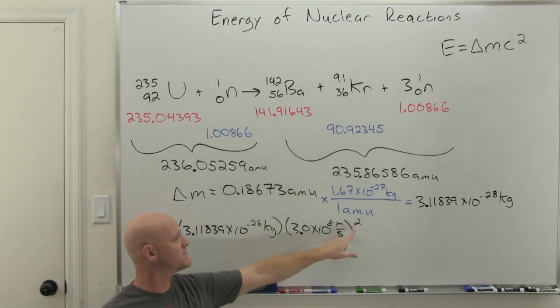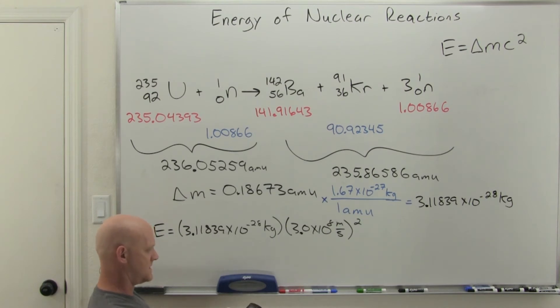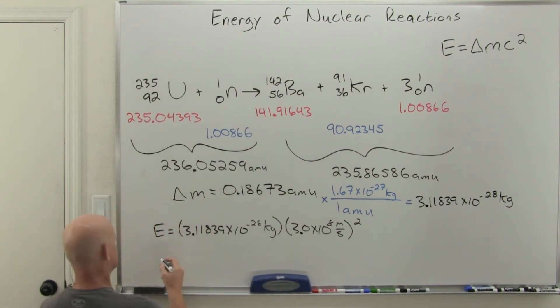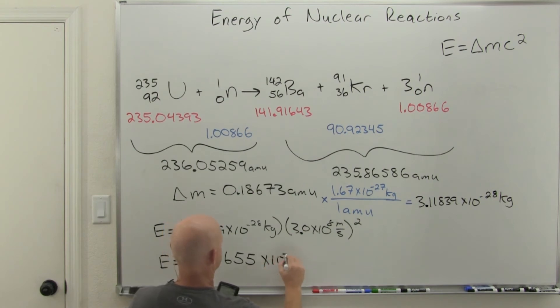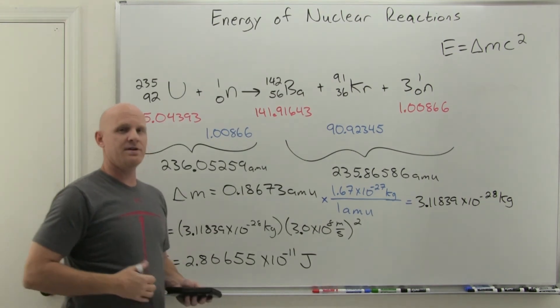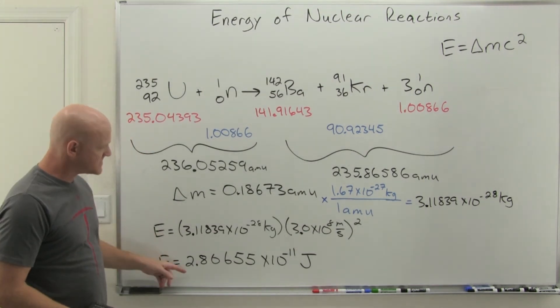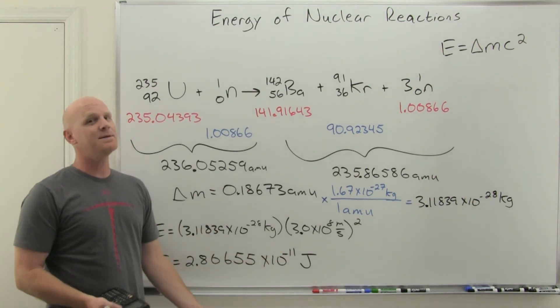Word to the wise: the most common mathematical mistake I see students making in this lesson is they forget to square it. They get all the numbers right but forget the square in their calculator. Times 3 times 10 to the eighth squared is going to get us 2.80655 times 10 to the negative 11 joules. That should still seem pretty small—0.0280655 joules—that's a tiny amount of joules.